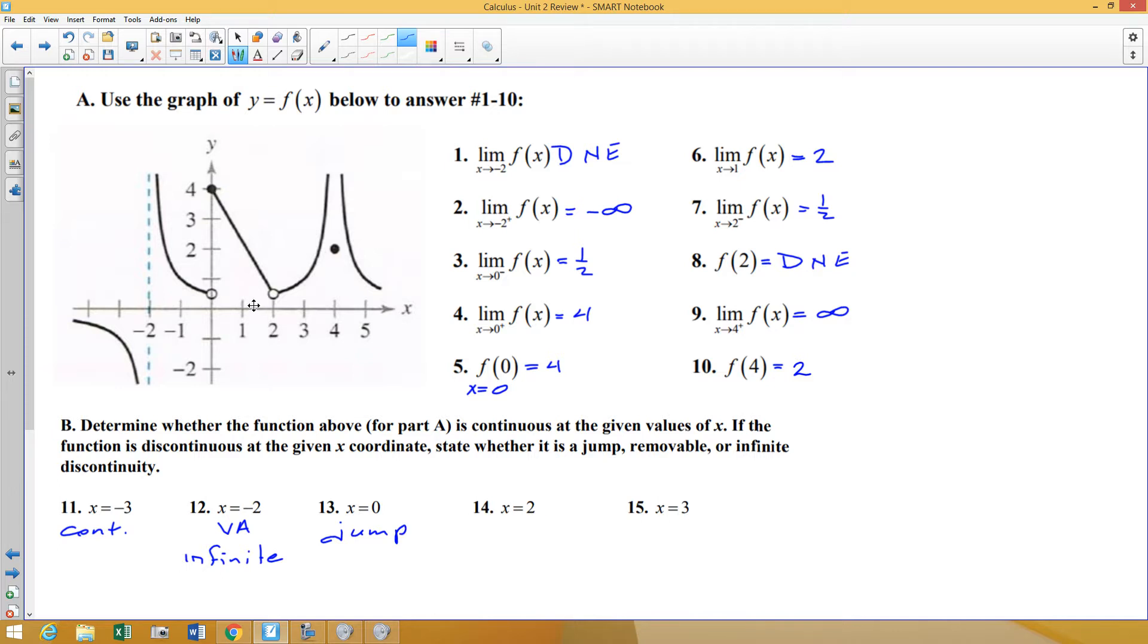At 2, that is a hole in the graph, which is a removable discontinuity. And x equals 3, the function does go clear through that point. There is not a huge defined bold point, but the function is continuous at 3. So there are your first 15 questions, and those are probably going to be the easiest on the whole review.